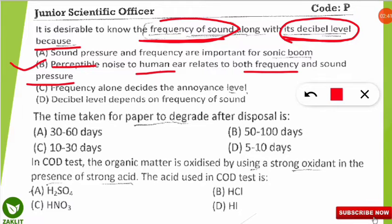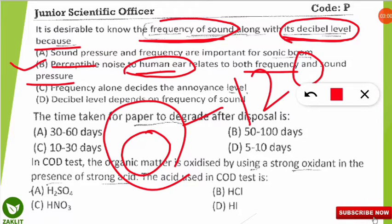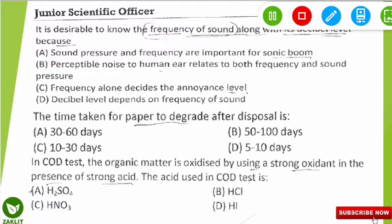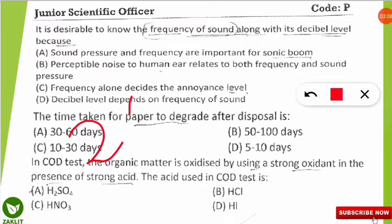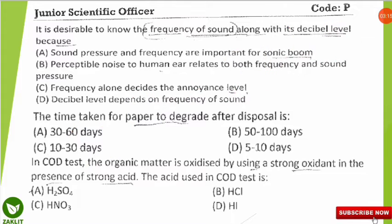We should know both the frequency and decibel level because noise is persistent and perceptible to the human ear in terms of both frequency and sound pressure. If anything exceeds the required range, it can damage our ears. The decibel range for the human ear is 0 to 120 or 130 dB, where 0 is the threshold. In terms of frequency, it is 20 Hz to 20 kHz.